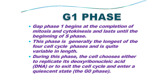Some cells keep on dividing, so they regularly complete the mitotic phase and enter into the G1 phase again. But few cells, like nerve cells, which once matured do not undergo cell division. So as soon as they mature, they exit from the cell cycle, and that is called the G0 phase.